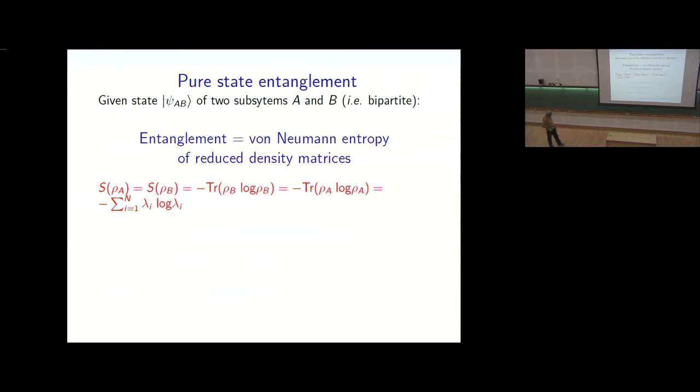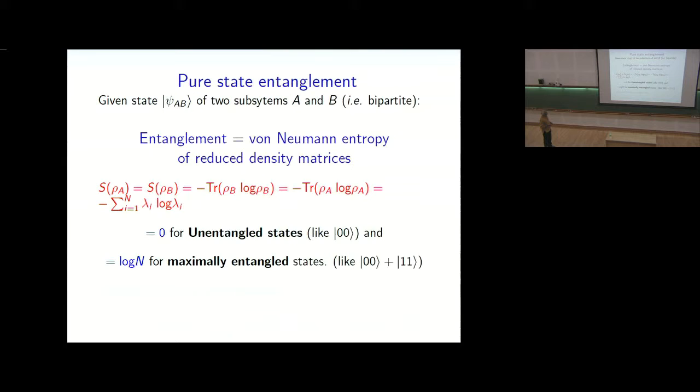Then the entanglement between these subsystems A and B is really simple because it's a pure state. It's just given by the von Neumann entropy of the reduced density matrices. So this is from an information theoretic point of view, a sort of unique characterization of the entanglement. You can cook up other measures, but there is a particular information theoretic interpretation of the von Neumann entropy which makes it unique.